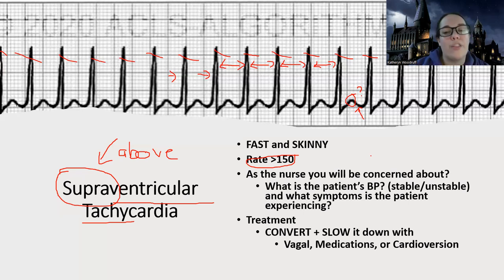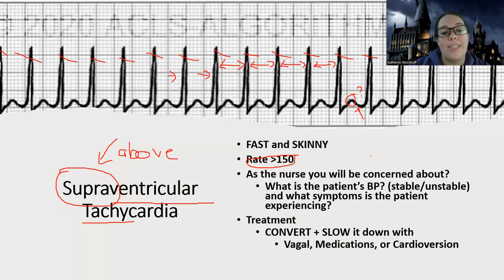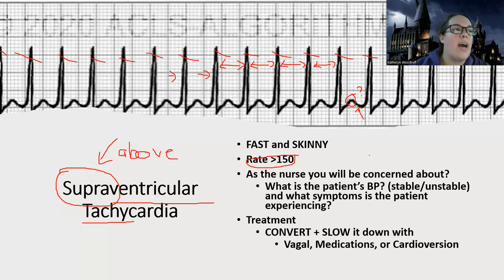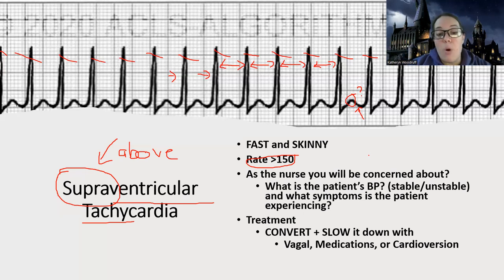I want to check their stability. The way we check a patient's stability with a dysrhythmia — I'm going to go in and check level of consciousness and orientation, their oxygenation, their blood pressure, and how they're feeling. There is a least-invasive to most-invasive order that we follow here when we talk about supraventricular tachycardia.